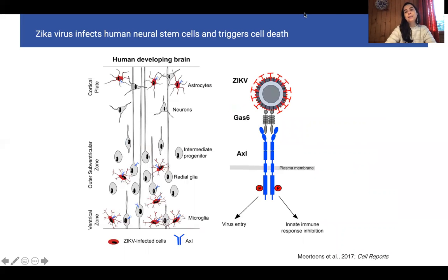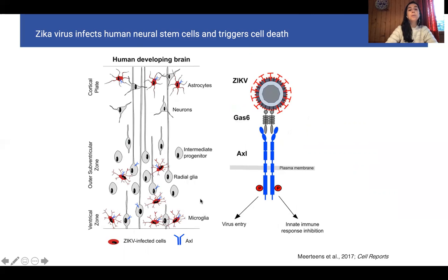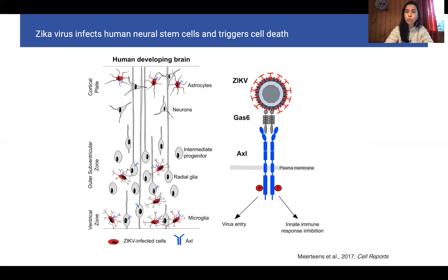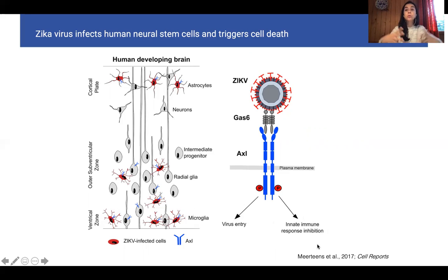We also know that Zika virus can enter cells via different receptors. One of those receptors is the tyrosine kinase receptor AXL. This receptor is present not only in the proliferative areas, but also in different types of cells such as microglia. Later in development, astrocytes also have these receptors, as do blood vessels. So the impact is not only in the proliferative zone and neuroprogenitors, but also in different cell types. This triggers not only cell death but also an innate immune response that can impact neurons indirectly via inflammation.